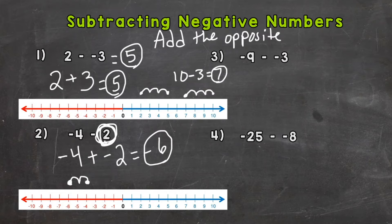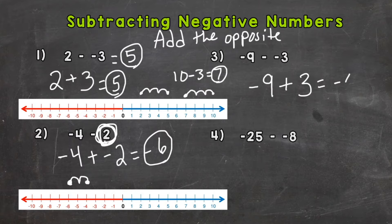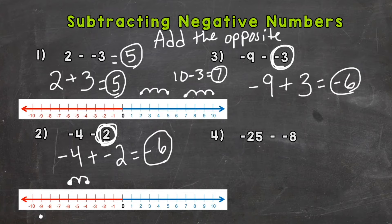For number three, let's add the opposite: we have negative nine, and the opposite of negative three is positive three, so negative nine plus three gives us negative six. On the number line, we start at negative nine and we're subtracting negative three. That negative sign tells us to do the opposite, so instead of going to the left we go to the right: one, two, three, and we end at negative six — the same answer.